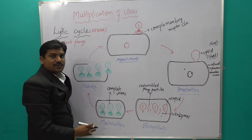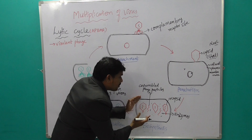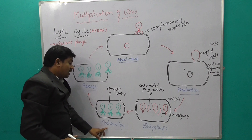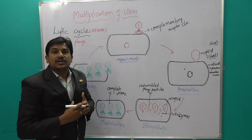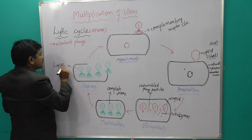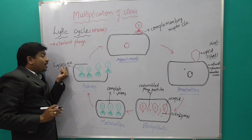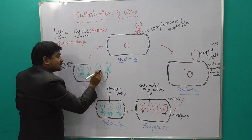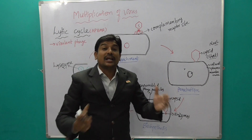The next stage is Maturation. The assembled parts are fused together to form complete virions — this is called maturation. Complete virions are produced within the E. coli bacteria and are ready to move outside. At this point, the bacteriophages release lysozyme enzyme, which ruptures the bacterial cell wall.